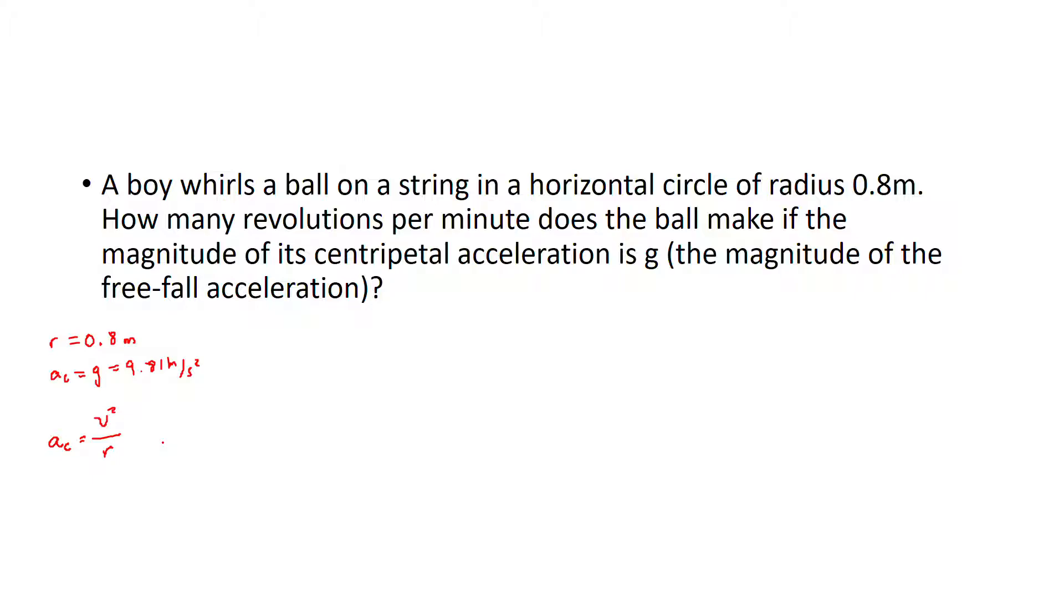So the velocity is going to be the square root of the acceleration times the radius. That's the square root of 9.81 times 0.8, and that equals 2.80 meters per second.